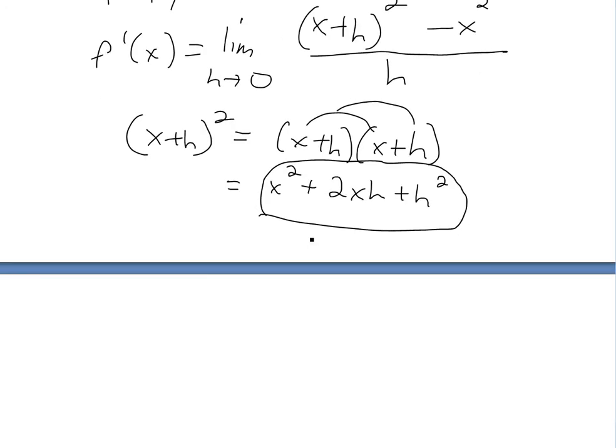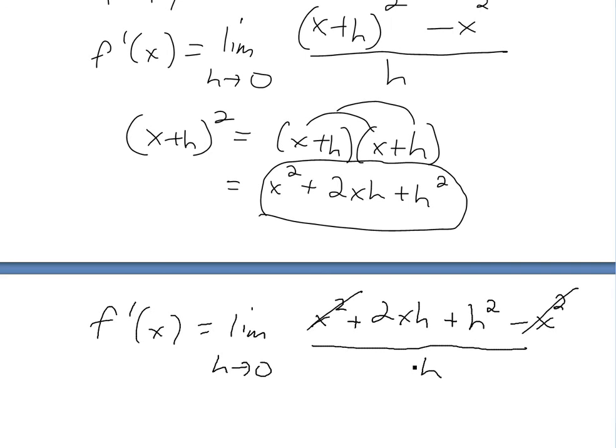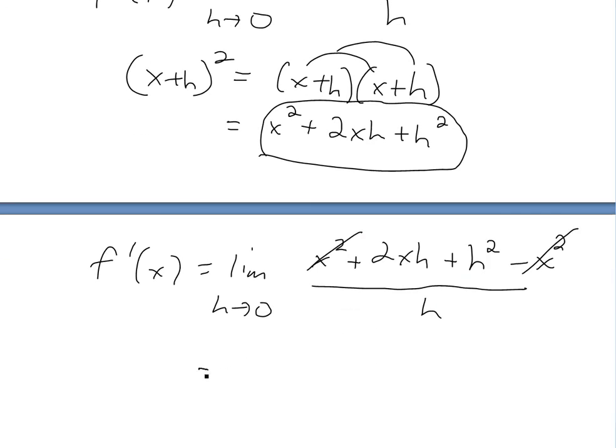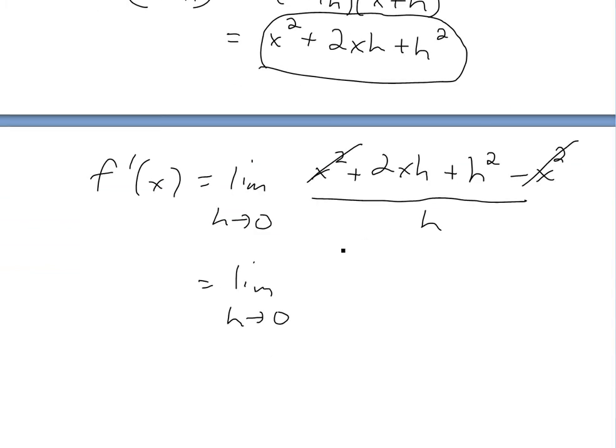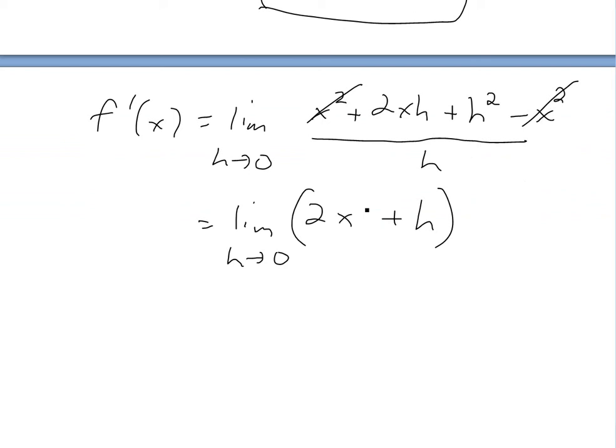Then if we put this inside there, we'll get f'(x) equals limit h approaches 0 of x^2 + 2xh + h^2 minus x^2, that's f(x), all over h. So here, this and this cancel. And then if we divide this out by h, we'll get equals limit h approaches 0 of 2x plus h. So there's the limit of this. And then the limit of this goes to 0. This just equals to 2x. So there's the derivative of it. So it's 2x here.